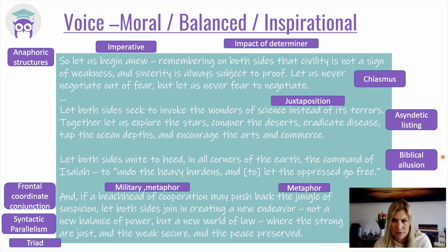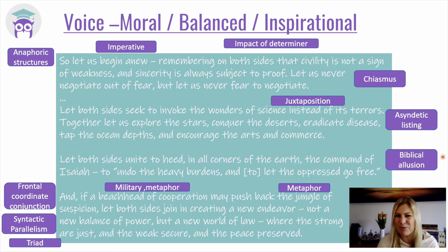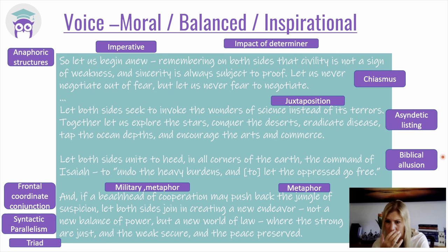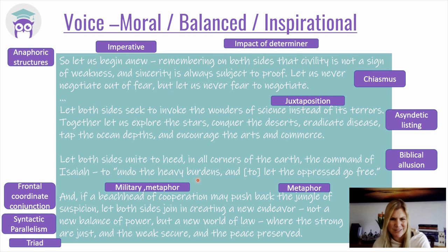He then shifts and we get a biblical allusion. 'Let both sides unite to heed in all corners of the earth the command of Isaiah — to undo the heavy burdens and to let the oppressed go free.' This is from the Book of Isaiah 58:6. In this moment in the Bible, Isaiah is talking about how in order to worship God properly, you've got to lead with charity and goodness. Undoing the heavy burdens means undoing the darkness that's already occurred — you've got to look after those who are oppressed and set them free. Very powerful.